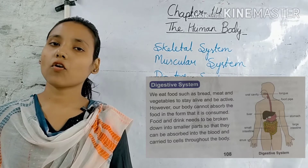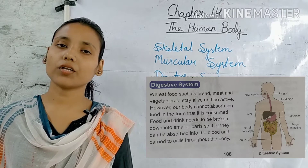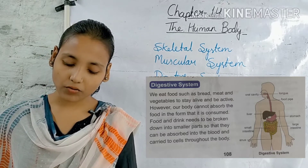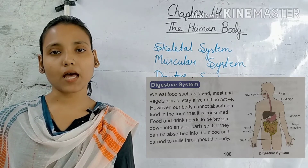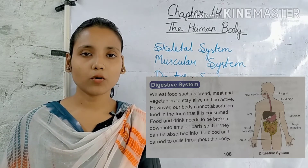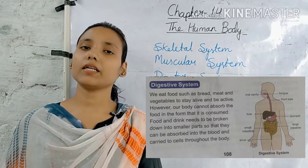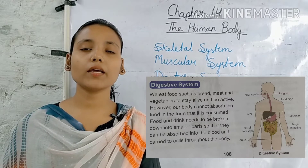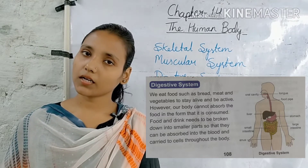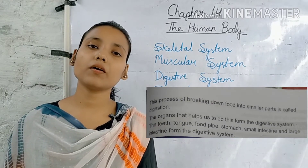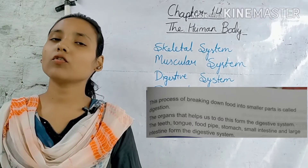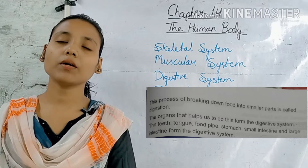Bachcho, लेकिन जिस form में हम भोजन लेते हैं, उस form में हमारी body उसे consume नहीं कर सकती। Food and drink need to be broken down into smaller parts so that they can be absorbed into the blood and carried to cells throughout the body. तो इसलिए bachcho, भोजन और पानी को छोटे-छोटे टुकड़ों में विभाजित करने की आवश्यकता होती है, जिससे कि वह हमारे blood में absorb हो सके और हमारी कोशिकाओं के द्वारा हमारे पूरे शरीर में पहुँच सके। This process of breaking down into smaller parts is called digestion. भोजन को छोटे-छोटे भाग में तोड़ने की इस प्रक्रिया को ही हम digestion कहते हैं।